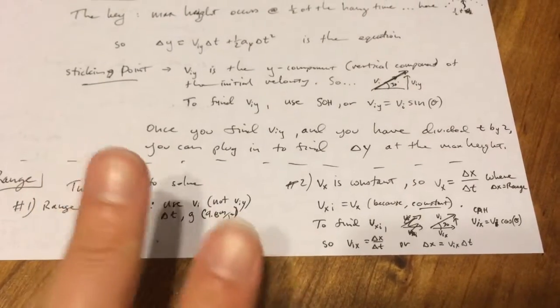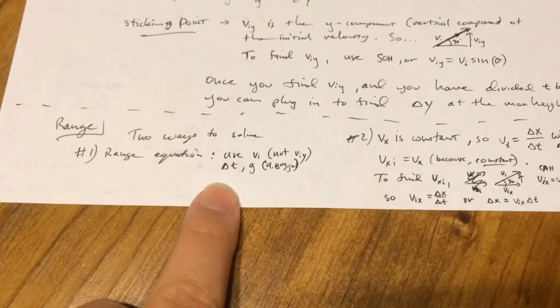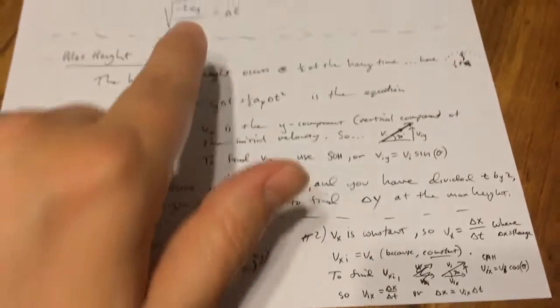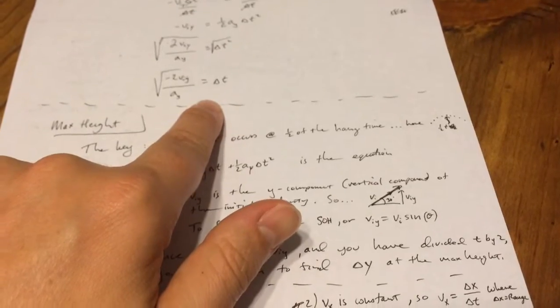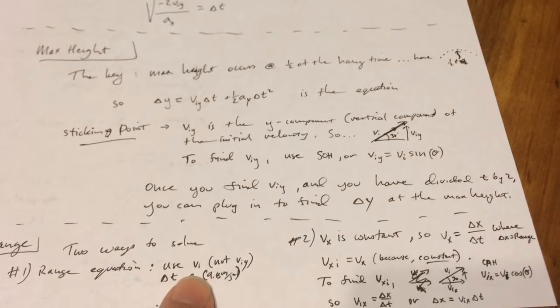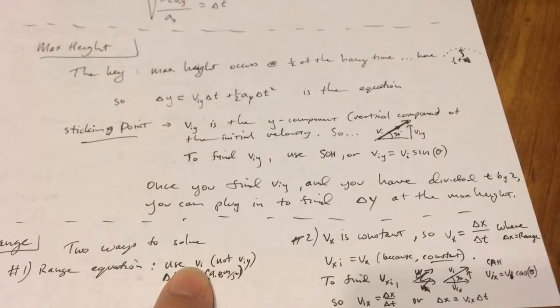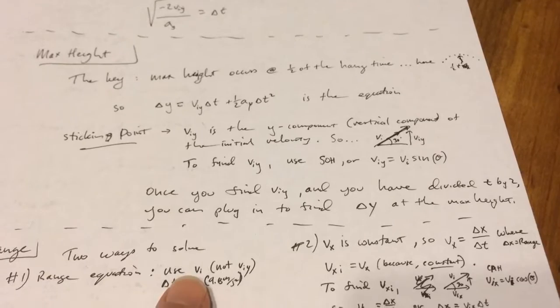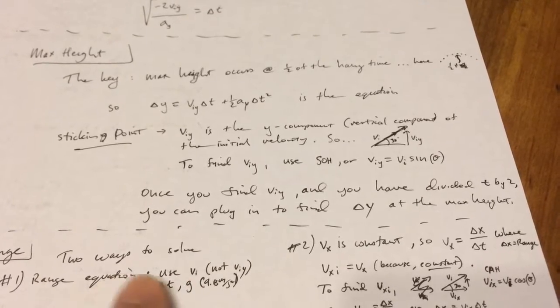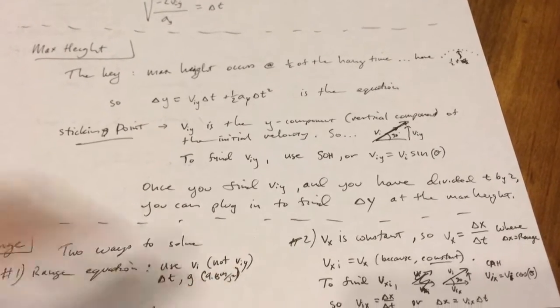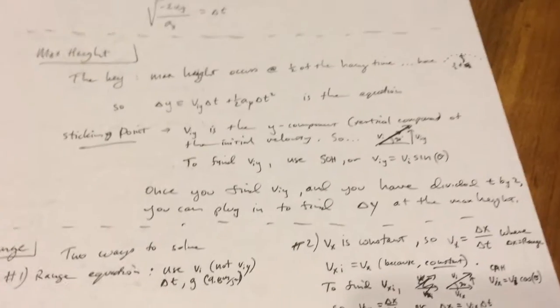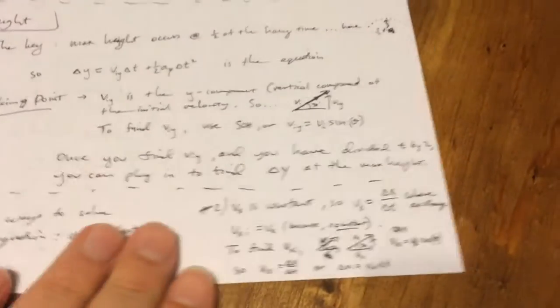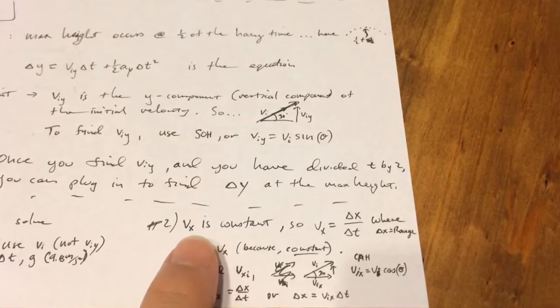There's two ways to do this. So first way is to use the range equation. And at this point you know delta t, it's the whole time delta t. You know vi, and for the range equation you use vi, not viy, because there's a sine theta already in the range equation which basically gets you viy. And you use g, which is 9.8 meters per second, not negative.